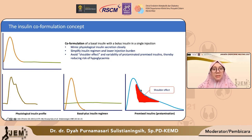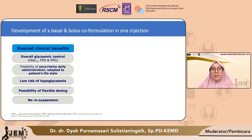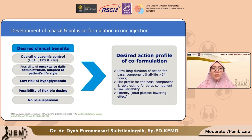Shoulder effect pada premix inilah yang seringkali menimbulkan keluhan hipoglikemi pada pasien. Dengan adanya insulin co-formulation ini, kita dapat secara langsung mengatasi hiperglikemia saat puasa maupun hiperglikemia saat postprandial, dan pemberiannya cukup sederhana satu kali sehari. Risiko hipoglikeminya juga lebih rendah dibandingkan dengan penggunaan insulin basal tunggal atau basal plus atau basal bolus, dan pemberian dosisnya cukup fleksibel. Insulin co-formulation terdiri dari dua jenis insulin, namun masing-masing insulin tetap mempertahankan karakteristiknya, baik yang ultra long acting maupun yang rapid analog, sehingga efeknya persis seperti memberikan insulin basal plus satu kali insulin bolus, tapi cukup diberikan dalam satu kali suntikan.